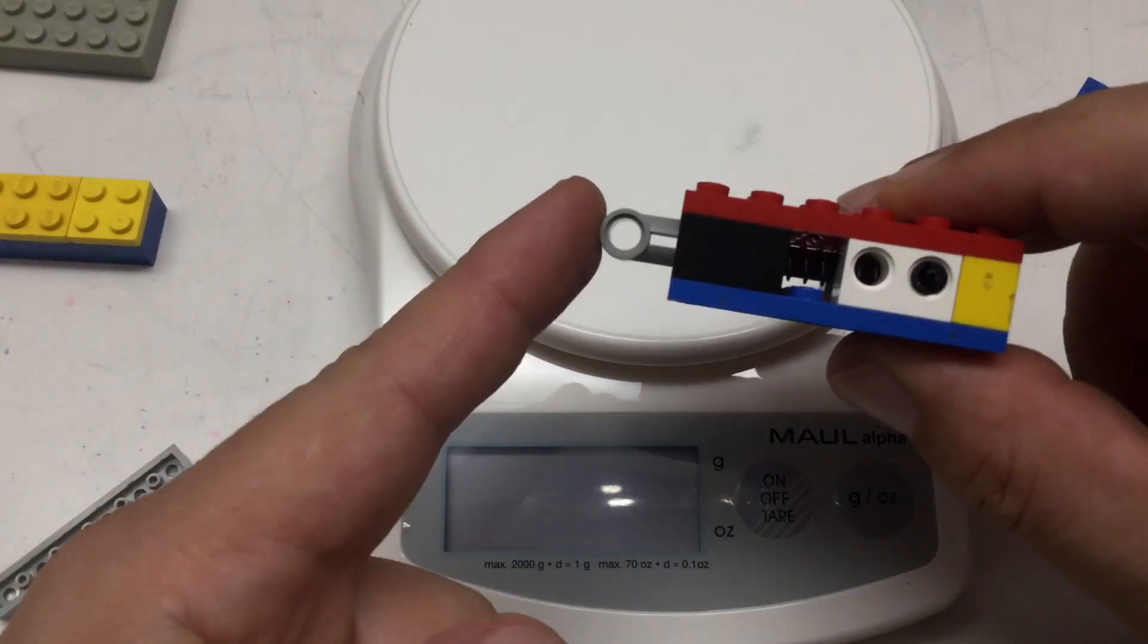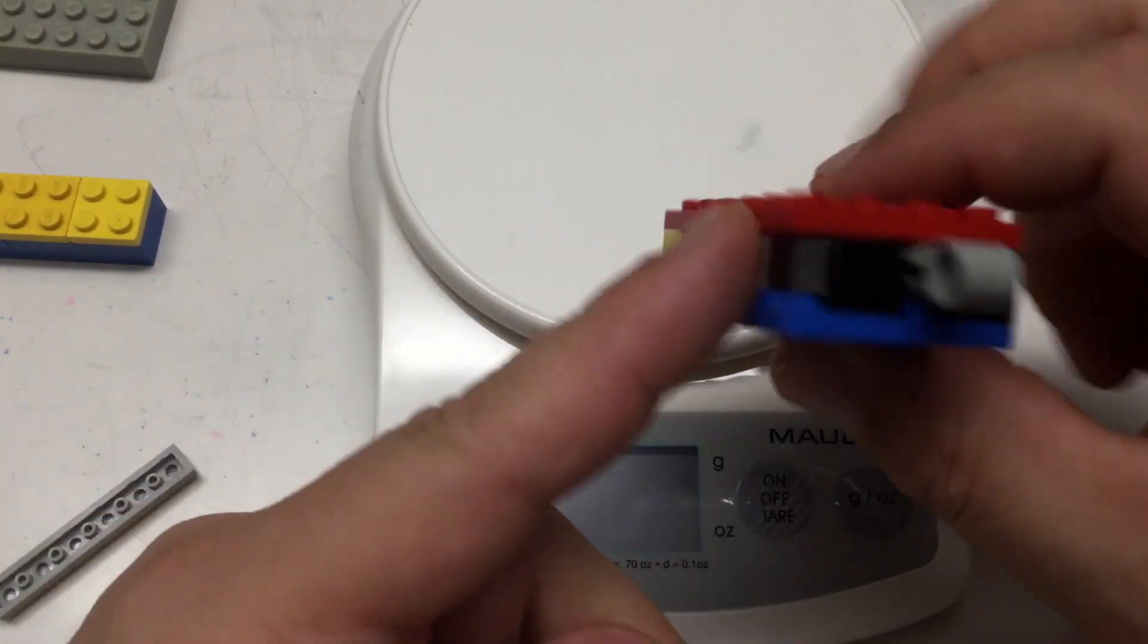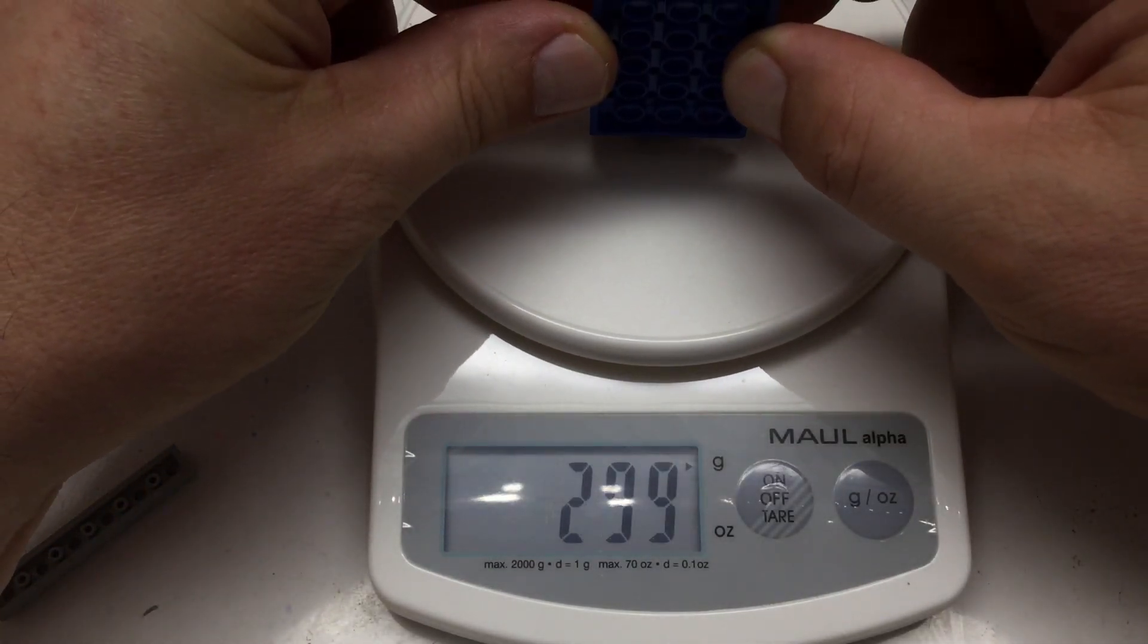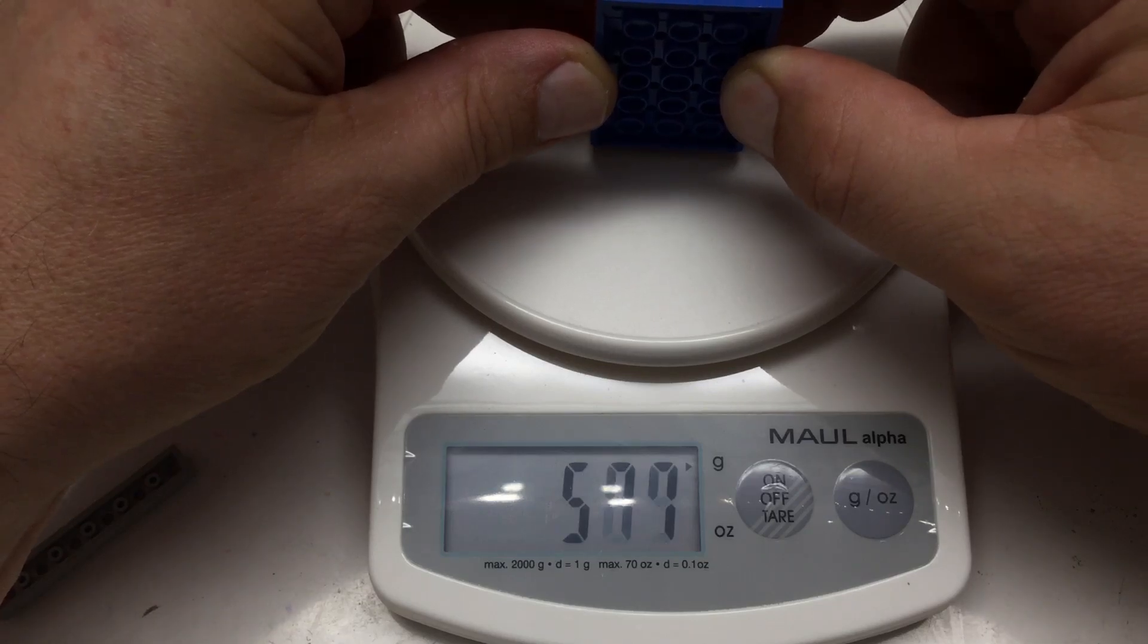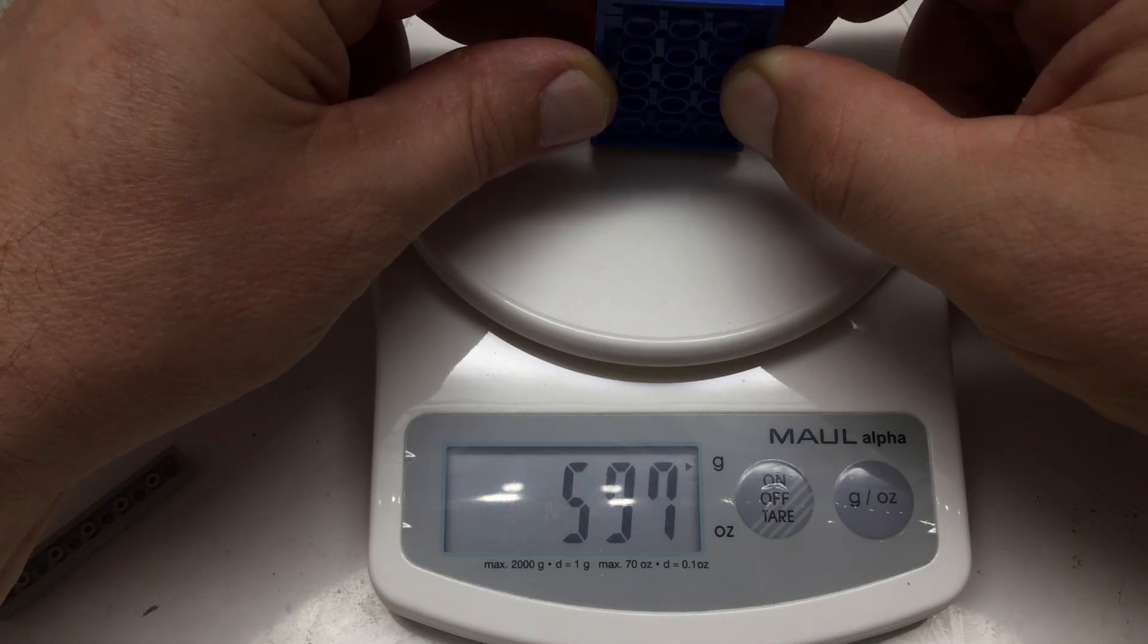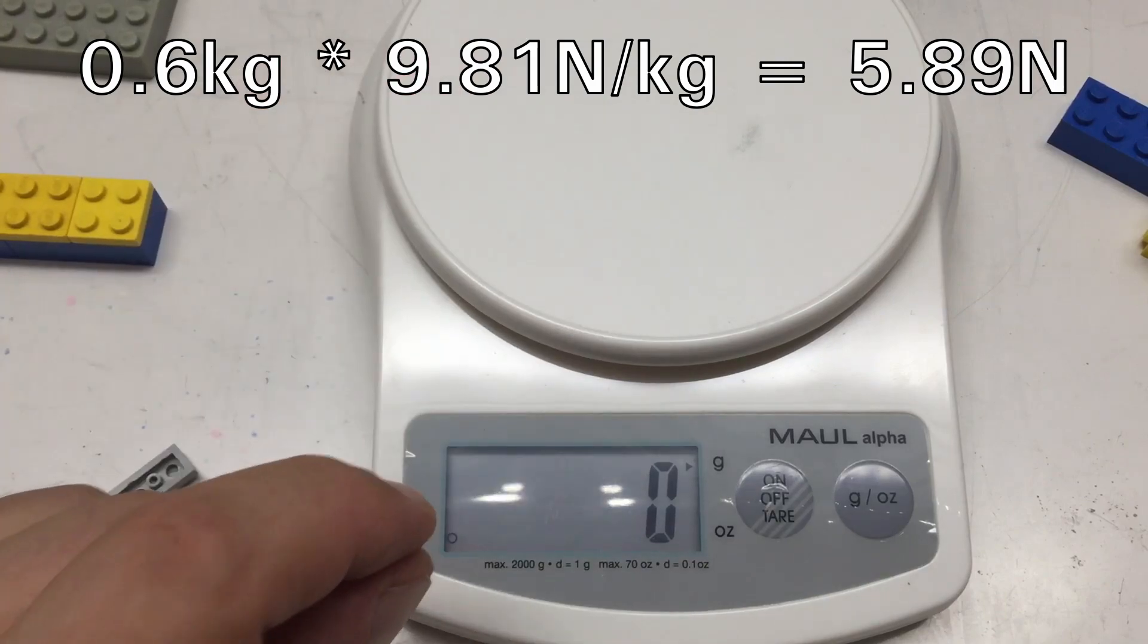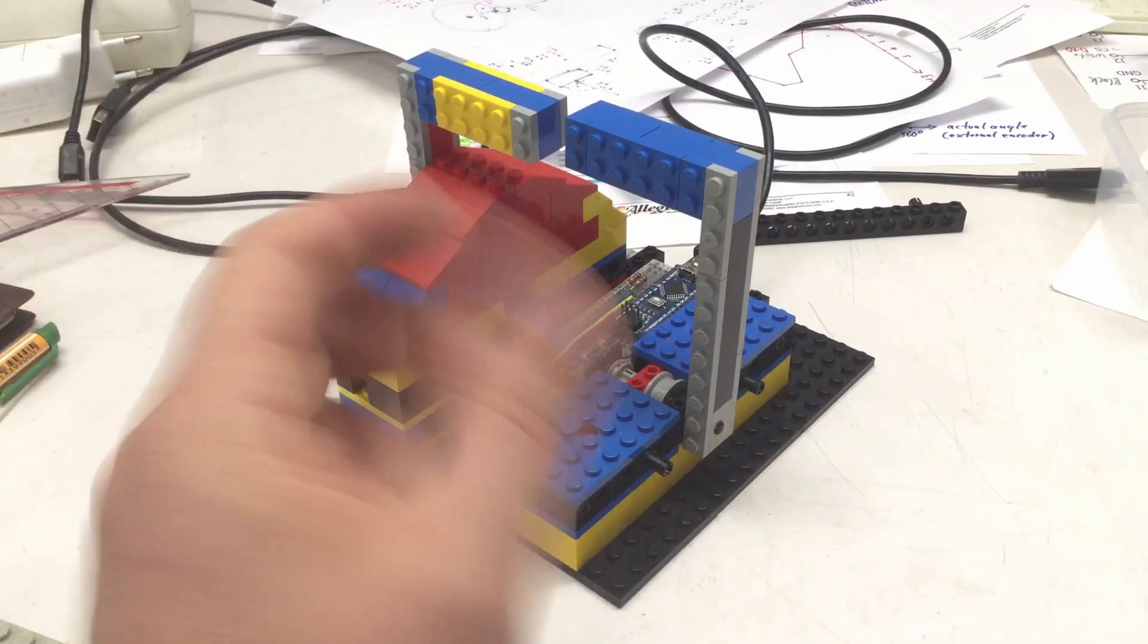Before we close that video up, let's measure what's the force here exerted by the spring when it's fully retracted. I just built that little thingy here. That's not a very precise measurement, but I guess we can say about 600 grams force. We can convert that into Newton of course. That was another important information point for me for further designing that thing. And that's it for today.